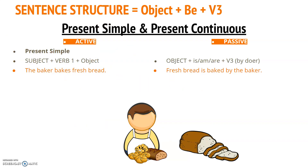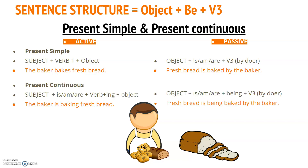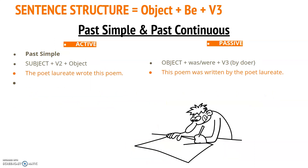Let's look at present simple first: 'The baker bakes fresh bread' becomes 'Fresh bread is baked.' Now present continuous: 'The baker is baking fresh bread' becomes 'Fresh bread is being baked by the baker.' Notice that in the continuous tense we use the form 'being' — so we need the verb 'to be' plus 'being' plus the past participle 'baked': 'is being baked' — present continuous passive voice.